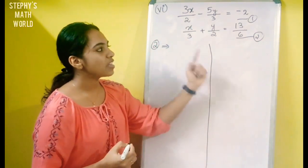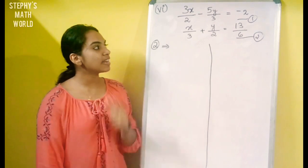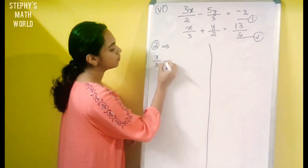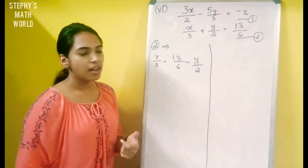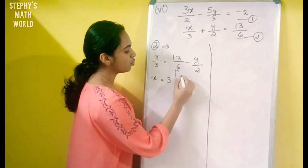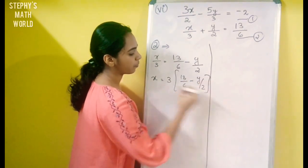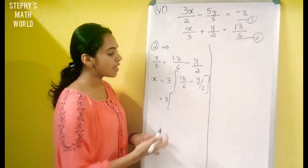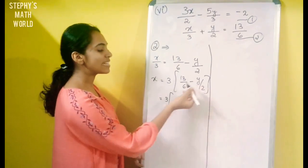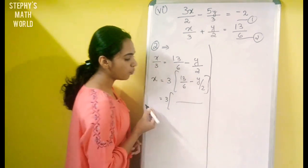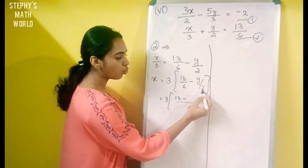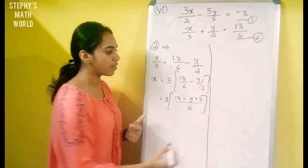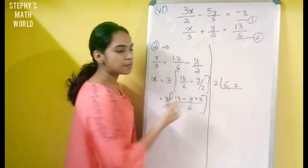Equation 2 implies: x by 3 plus y by 2 is equal to 13 by 6. We will solve this equation. So x by 3 is equal to 13 by 6 minus y by 2. Therefore x is equal to 3 into 13 by 6 minus y by 2. So x is equal to 2 into LCM, and y is equal to 3 into LCM.